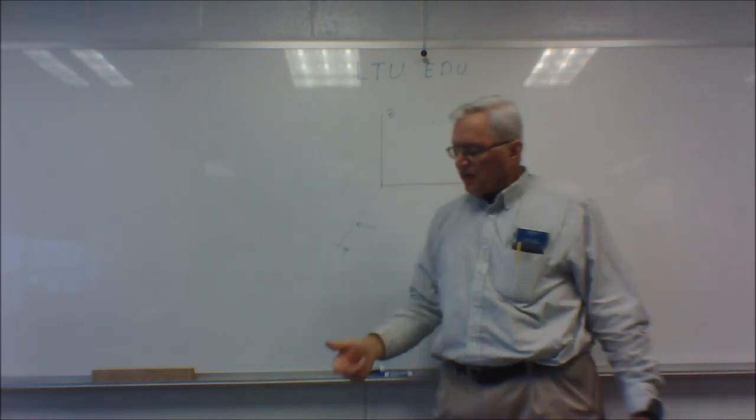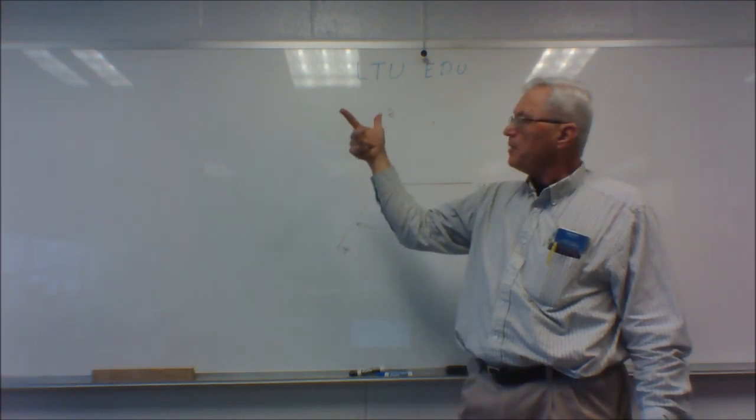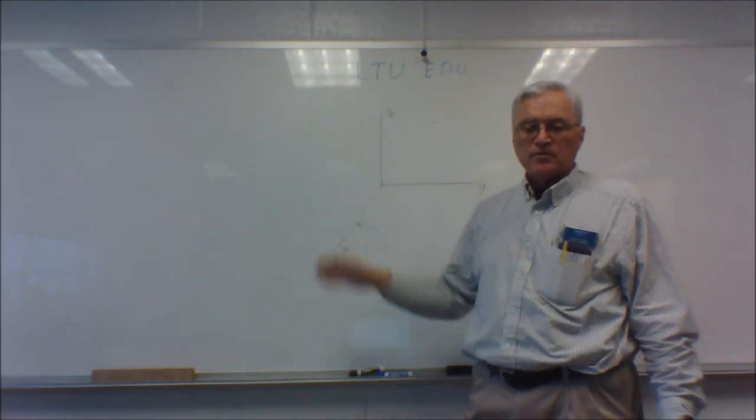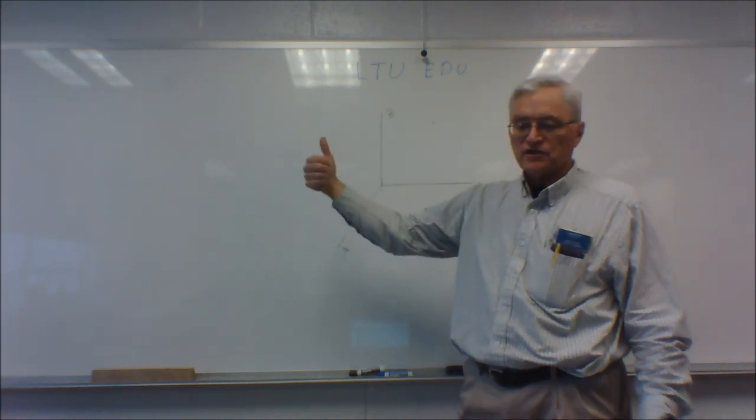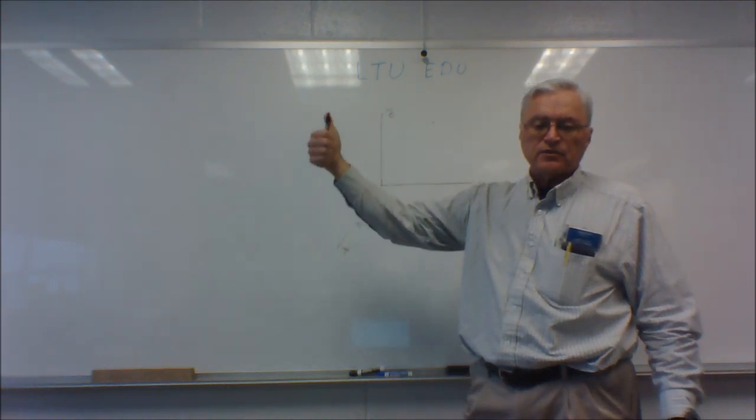So for axis directions, thumb, first finger, middle finger point in the positive x, y, and z directions, and for the moments you curl your fingers in the direction you're twisting your system and your thumb will point in the direction of the moment.